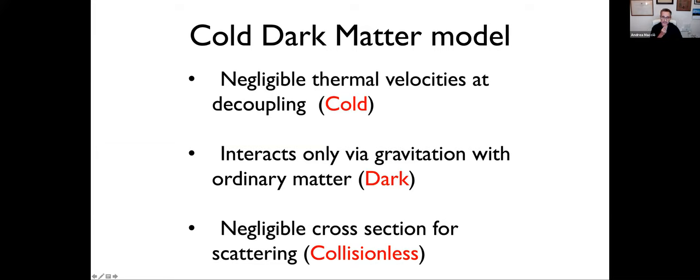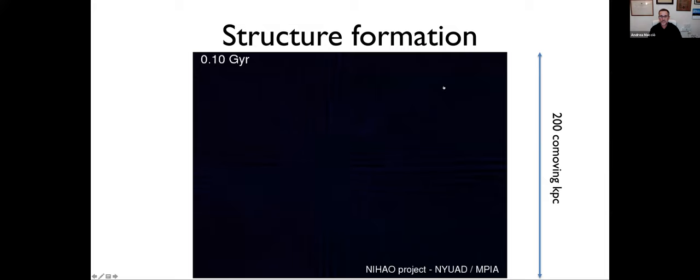Cold dark matter is based on three properties: it is cold, meaning it has negligible thermal velocity at decoupling, so most velocities arise purely from gravitational collapse; it only interacts with ordinary matter via gravitation, so it is dark; and there is practically no cross-section for scattering, so it is collisionless.